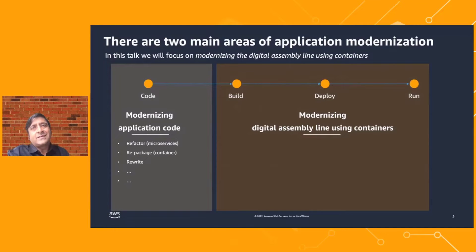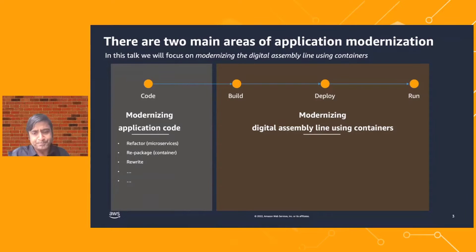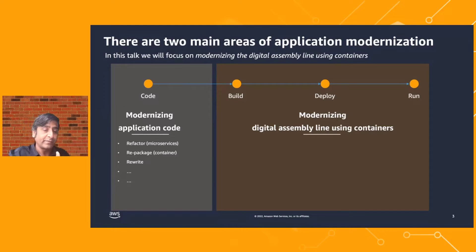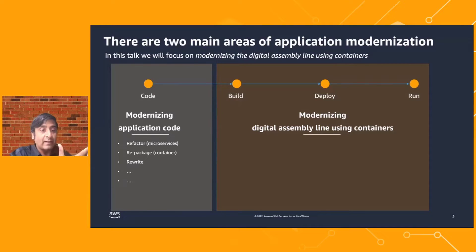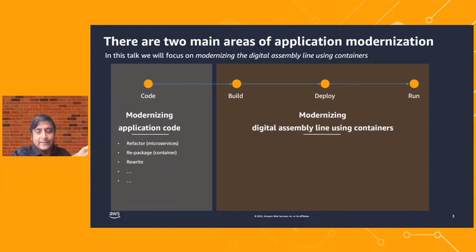Application modernization is a broad term, but you can break it down into at least two major areas. One area is related to your application itself — the application code. You may have valuable applications written previously in a language you want to change, or monolithic code that's become bulky and hard to maintain. Maybe you want to refactor it, or retire it and use a SaaS application. All sorts of different strategies — refactoring, repackaging, rewriting — are deep topics in themselves.